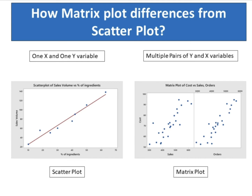How does the Matrix Plot differ from Scatter Plot? Use Scatter Plot to investigate the relationship between a pair of continuous variables. A Scatter Plot displays ordered pairs of X and Y variables in a coordinate plane. On the other hand, use Matrix Plot to assess the relationships between several pairs of variables at once. The plot shows every combination of sales and order against cost.